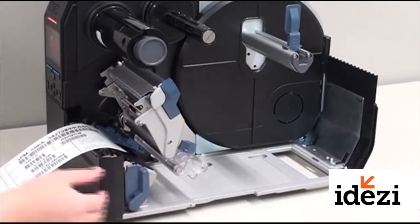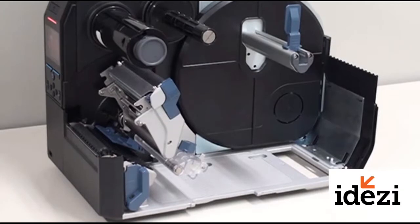Release the printhead latch so that you can thread the media under the printhead. Remove any existing media stock from the printer.